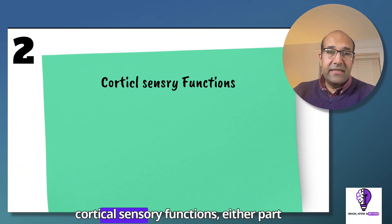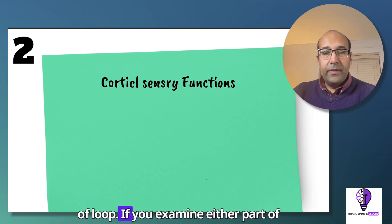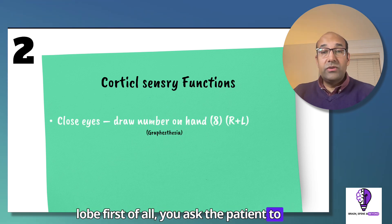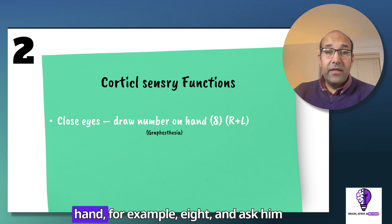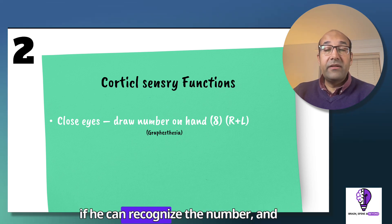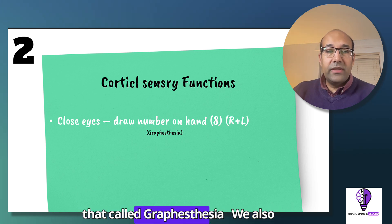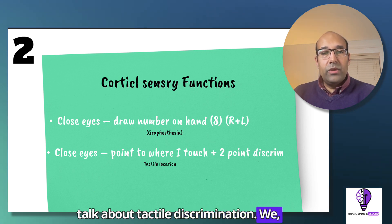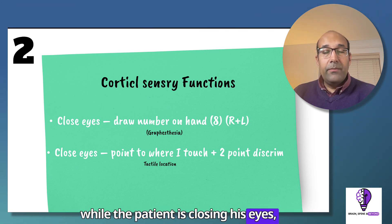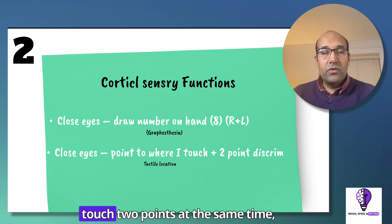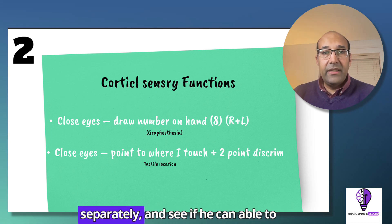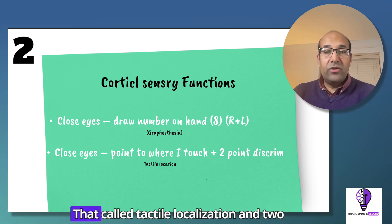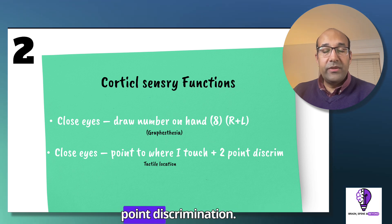Moving to the next item, which is cortical sensory functions — applicable to either parietal lobe. First, ask the patient to close his eyes and draw a number in his hand, for example eight, and ask if he can recognize the number. That's called graphesthesia. Also test tactile discrimination: while the patient has his eyes closed, point where you touch him, then touch two points at the same time, and see if he can identify that two-point discrimination. That's called tactile localization and two-point discrimination.